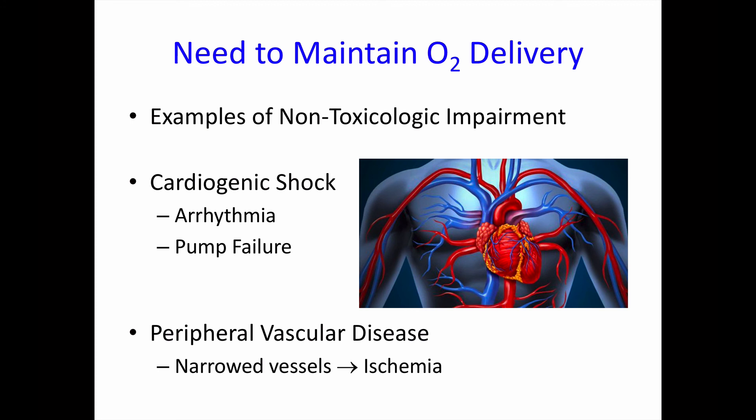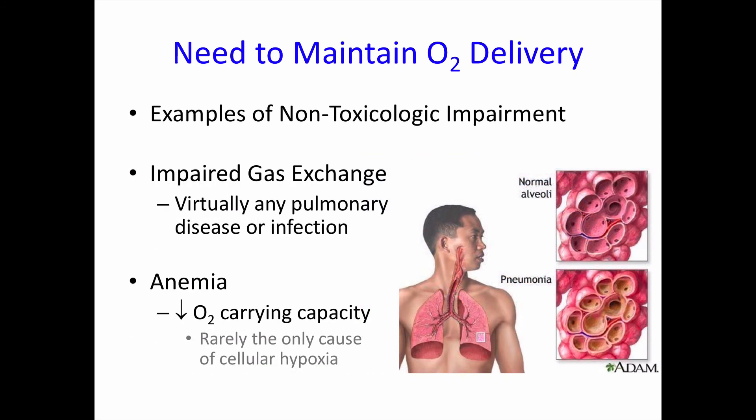I'm going to first give some examples of non-toxicologic ways that oxygen delivery could be impaired. If the heart is not pumping enough blood, we go into cardiogenic shock, which might be from a cardiac arrhythmia or a decrease in inotropy causing heart failure. Even if the blood is being pumped well, there is still the downstream plumbing to consider. If you have peripheral vascular disease — say, a narrowing from cholesterol deposits — that will impair downstream perfusion and lead to tissue ischemia. Impaired gas exchange might occur from nearly any kind of pulmonary disease or infection, such as pneumonia where the alveoli get filled with fluid. And if hemoglobin levels are low with anemia, that will reduce the amount of oxygen carried to the tissues, though it's relatively rare that anemia alone causes tissue ischemia unless very severe or acute, since compensatory mechanisms such as tachycardia can reflexively increase oxygen delivery.